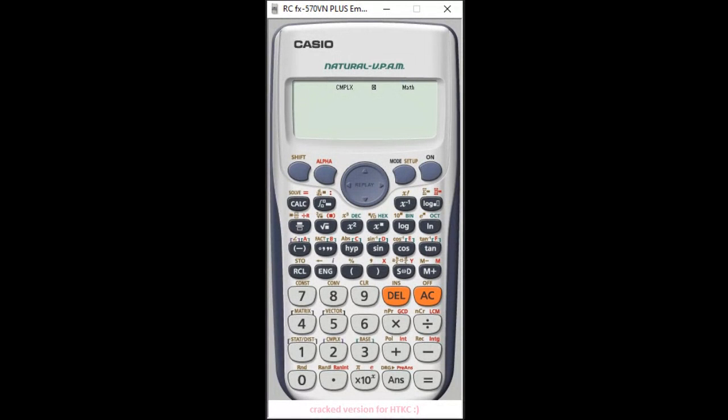Here's the calculator. The first thing you're going to do is go to mode. Click mode. Then you see number 6 says matrix. So click on number 6.